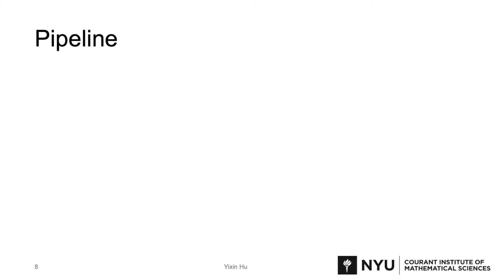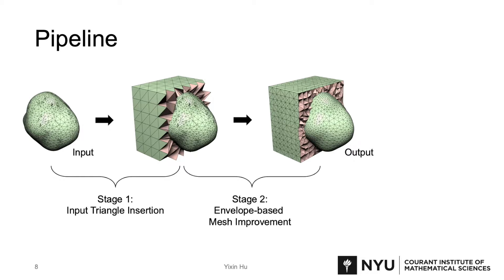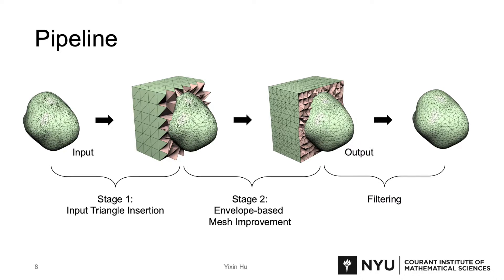The pipeline of fTetWild consists of two stages. The first stage takes as input a triangle soup and inserts the input triangles into a background mesh. The second stage applies envelope-based mesh improvement to optimize the quality of the mesh and output a valid tetrahedral mesh with input conformed or approximated within an envelope. Users can control the envelope size, and in the end, users can choose to filter out the elements outside of the surface.